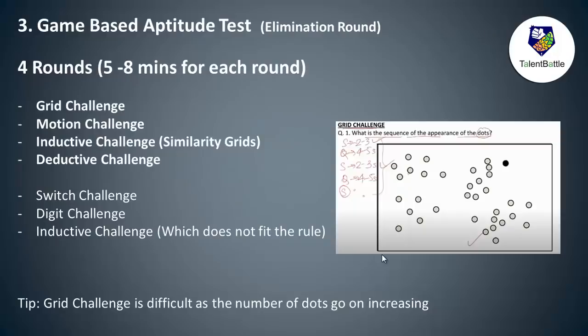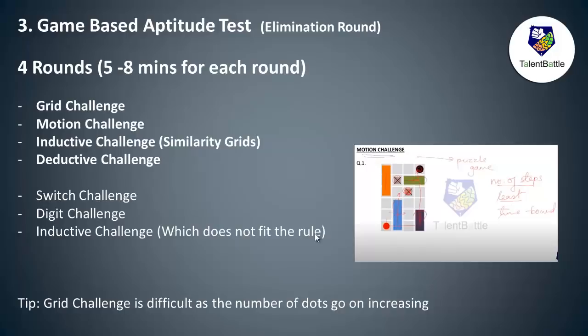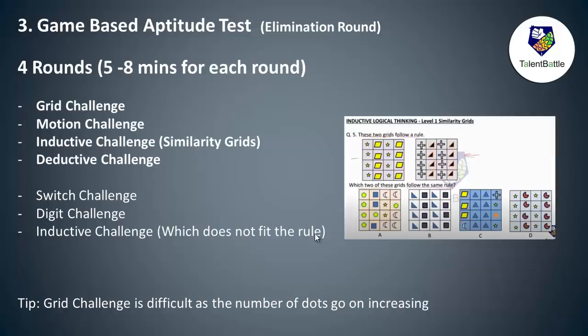Moving to the game-based test — there are four rounds, each around five to eight minutes. The first is the grid challenge, where dots appear one by one and you must remember their positions, while also identifying whether a figure is symmetrical. The second is the motion challenge, where you need to put a ball into a hole. The third is an inductive challenge based on similarity grids, where you find the common rule between two given grids.